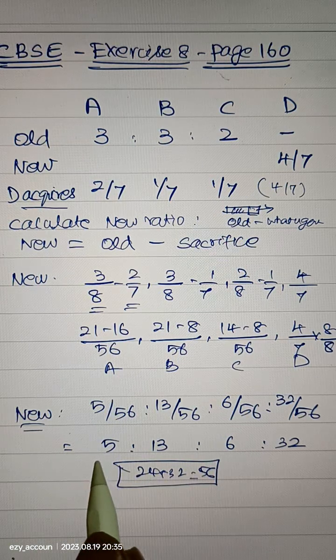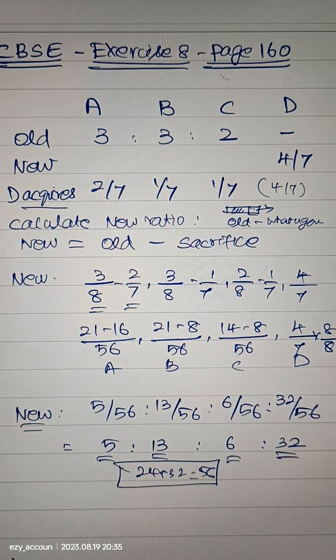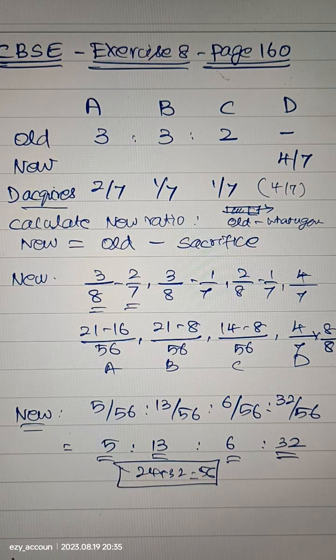So the new ratio is 5 is to 13 is to 6 is to 32. Please do it on your own, and if you have any doubt, please leave it in the comment section. Thank you.